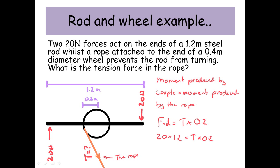So we have 20 times 1.2 equals T times 0.2. Rearranging this gives T equals 120 Newtons.